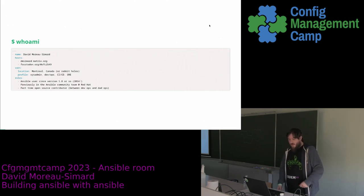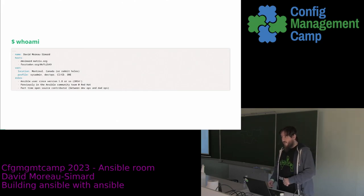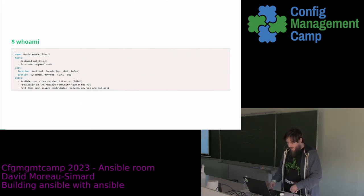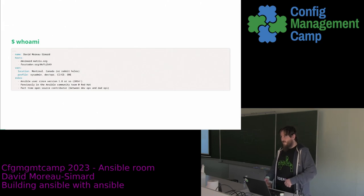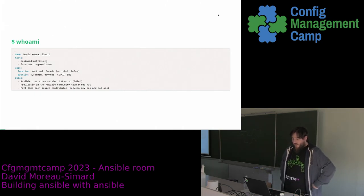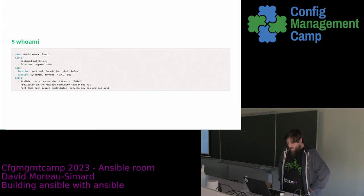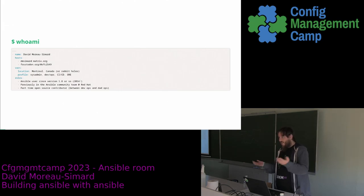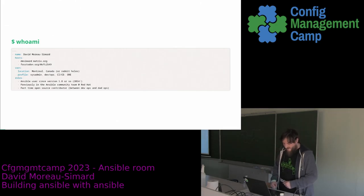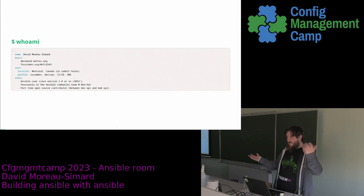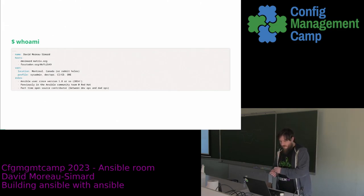Who am I? I am David Morosimard, you can reach me on Matrix or FOSDEM. I flew from Montreal, Canada, and I have a background that is fairly wide in system administration, CI/CD, SRE, and various things about servers, infrastructure, application deployment and all of that. I have been using Ansible for a pretty long time — at least since 2014, back in 1.0.8. I remember the transition to 2.0, that was fun. I was previously in the Ansible community team, not anymore, but I'm here and I still chat with them. Nowadays I am a part-time open source contributor, independent, between DevOps duties, as a hobby if you will.